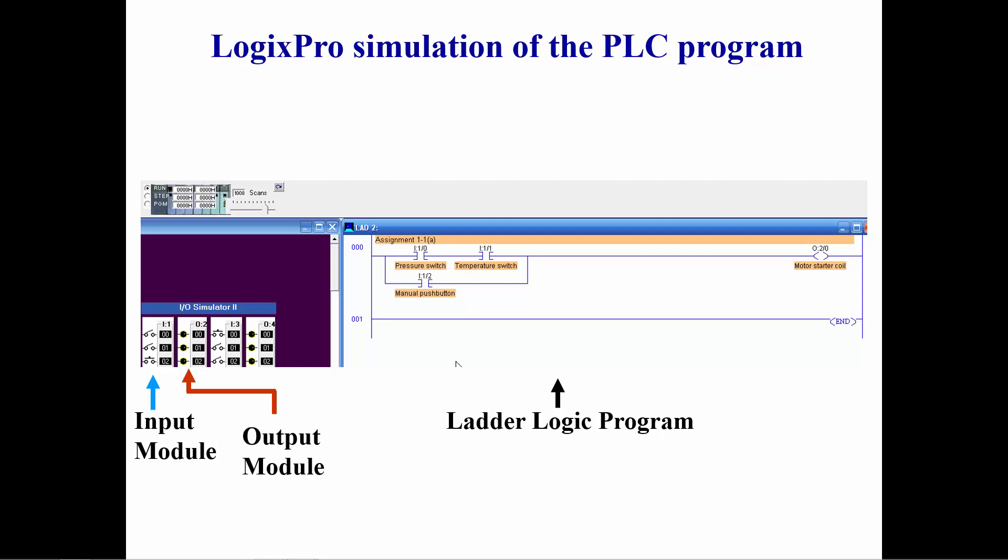When the input switch for I colon 1 slash 0 simulating the pressure switch is closed, the corresponding instruction in the ladder logic program is highlighted in yellow indicating that there is logic continuity. When the input switch for I colon 1 slash 1 simulating the temperature switch is closed, the corresponding instruction in the ladder logic is highlighted.